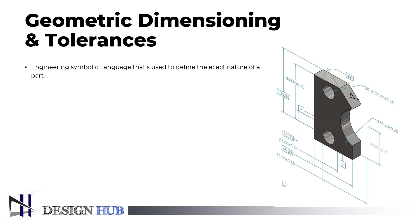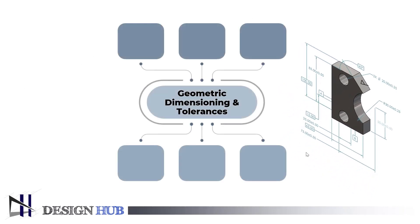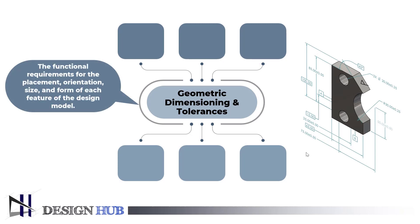Geometric dimensioning and tolerances consist of a symbolic language used by engineers that are used to define the exact nature of a part due to imperfections in manufacturing and inspection. It is an important aspect of the design to specify the number of part features that may deviate from their theoretically correct geometry. A symbolic language known as GD&T is used on engineering drawings and models to specify the allowable deviation of feature geometry. To be able to precisely communicate the functional requirements for the placement, orientation, size, and form of each feature of the design model.